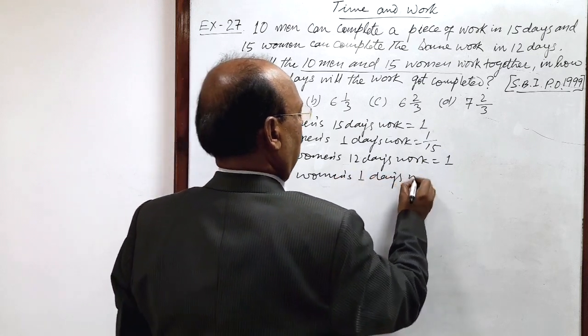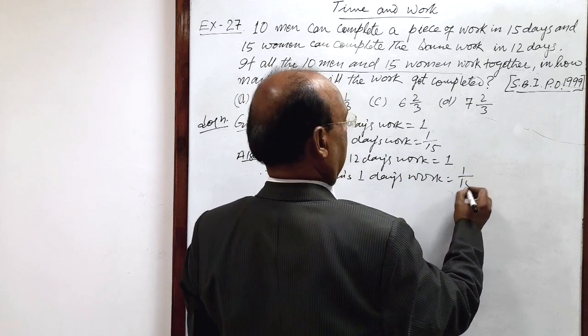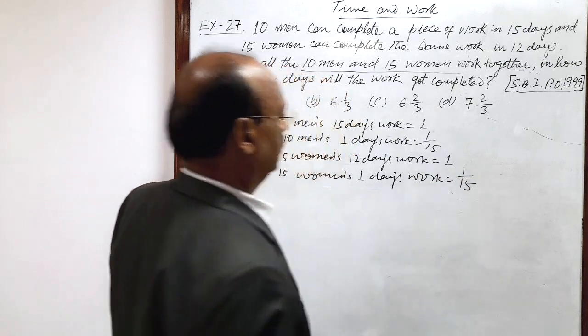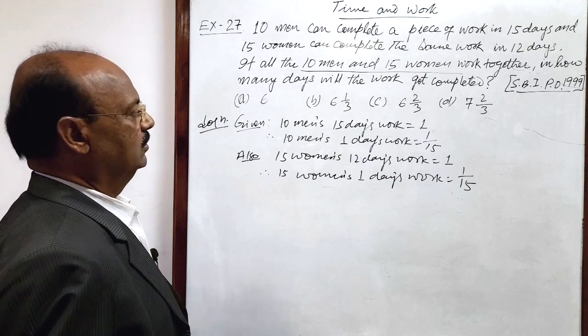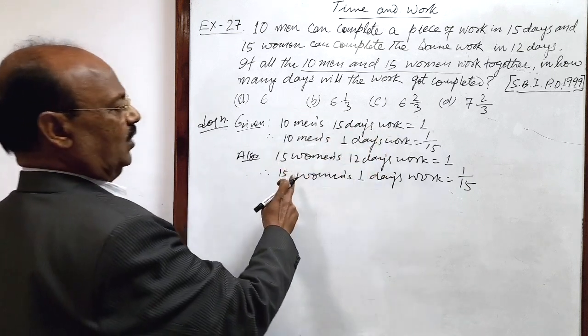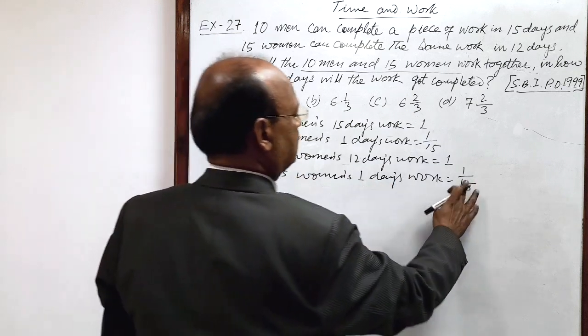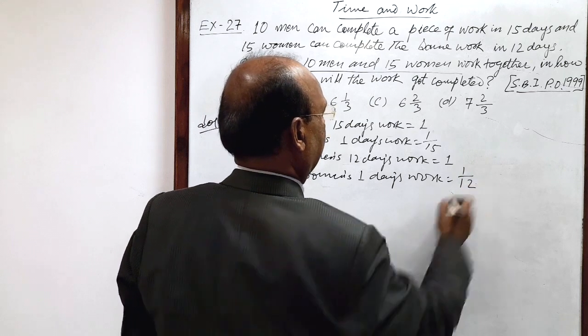1 day's work is equal to 1 by 12. This is 10 men's 1 day work is 1 by 15 and this is 1 by 12. 12 days work is 1, so 1 day's work is 1 by 12.